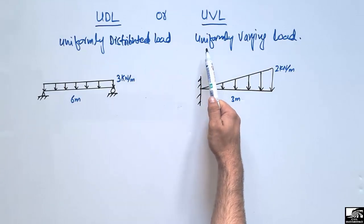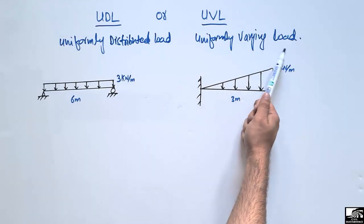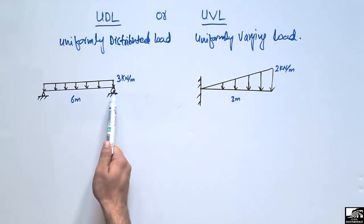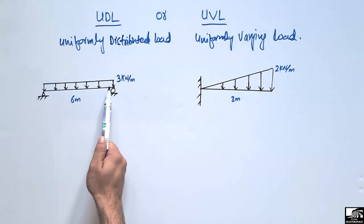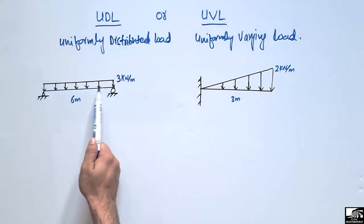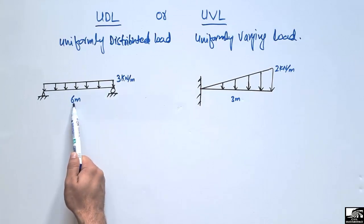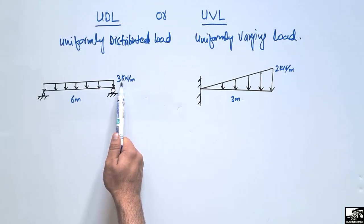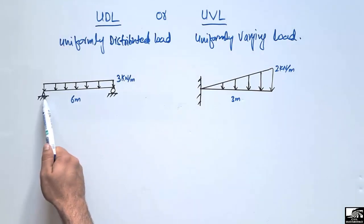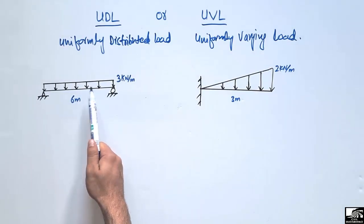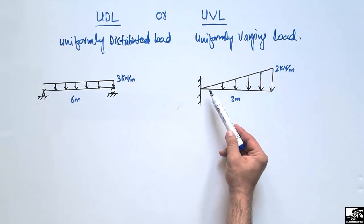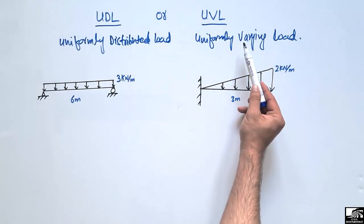We will look at how to deal with beams when there is a uniformly distributed load or uniformly varying load acting on them. Consider a simply supported beam with a uniformly distributed load, having a length of 6 meters and a load of 3 kN per meter distributed over the whole length. Similarly, there is a cantilever beam with a uniformly varying load.